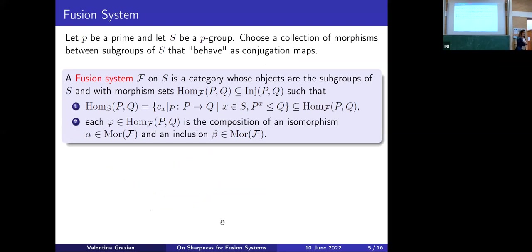The fusion system F on S is a category with objects as before — all the subgroups of S. Since we cannot talk about conjugations (we don't have G), the morphisms from P to Q are injective group homomorphisms, because conjugations are injective. We want to include all conjugation maps by elements of S — the black maps in the example were always there. And there is a technical requirement: every morphism is a composition of an isomorphism and an inclusion, ensuring that if you have a fusion map, you also have the inverse fusion map in your category.